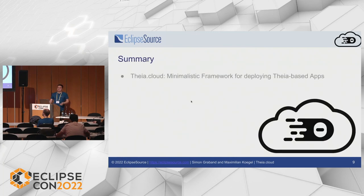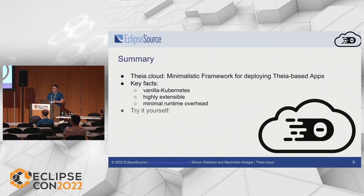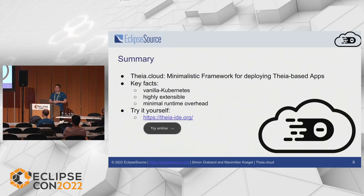To summarize: Thea.cloud is a minimalistic framework for deploying Thea-based apps. The key facts are that we use vanilla Kubernetes, it is highly extensible, and we aim to introduce only minimal runtime overhead to save costs for adopters. You can try it yourself at thea-ide.org using the 'Try Online' button, and for more information visit thea-cloud.io.